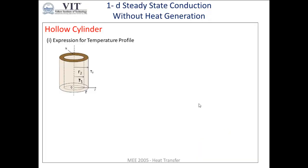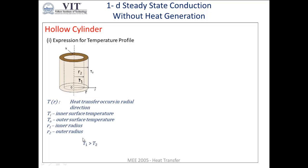Consider a hollow cylinder whose internal radius is R1 and outer radius is R2. The surface at the inner radius R1 is maintained at a temperature Ti and the surface at the outer radius is maintained at a temperature T0. Since Ti is greater than T0, heat transfer will occur from the inner surface to the outer surface, and heat transfer takes place in the radial direction.